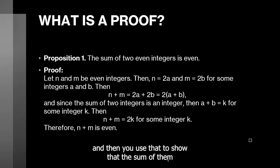And then you use that to show that the sum of them is also gonna be a multiple of two. Basically, you're just using the definitions for even integers to show that the sum of them also falls into that definition. We'll go into this proof in detail later when we see how to break it down using Polia's method.